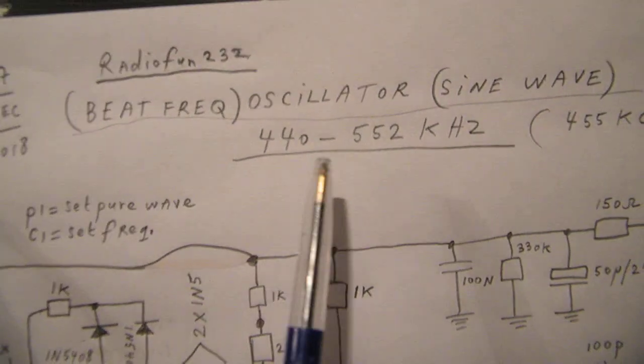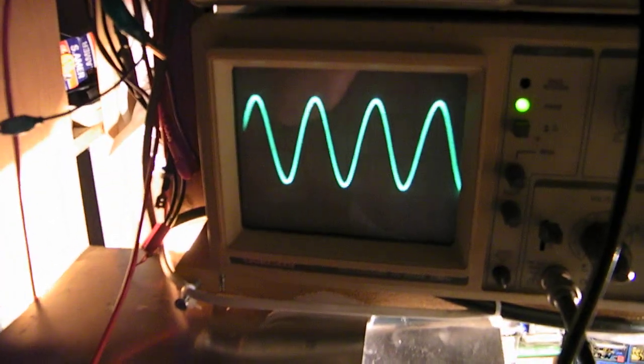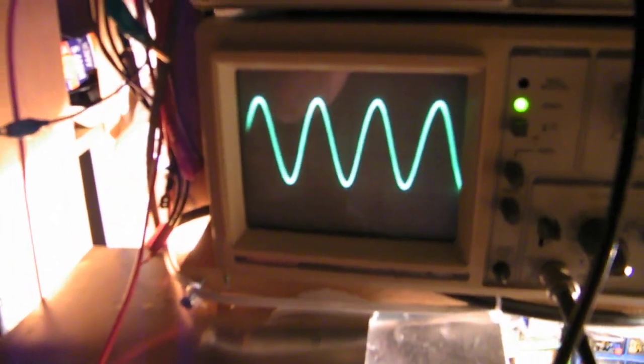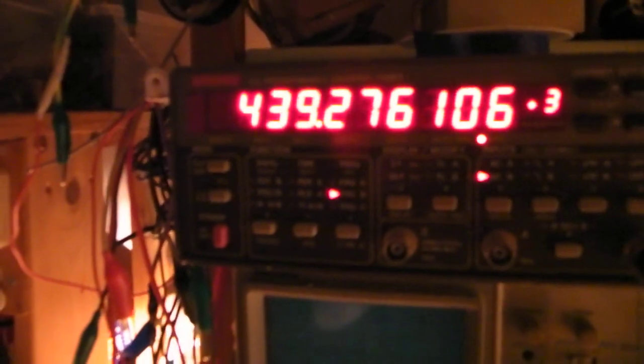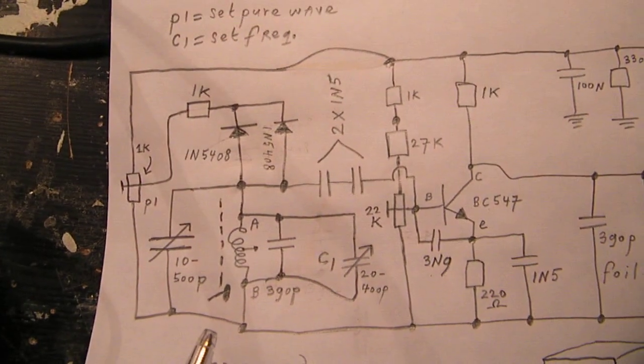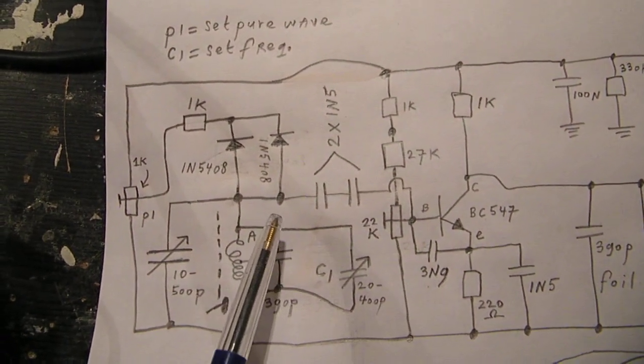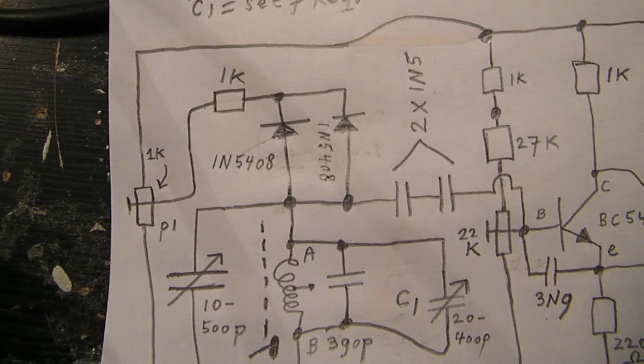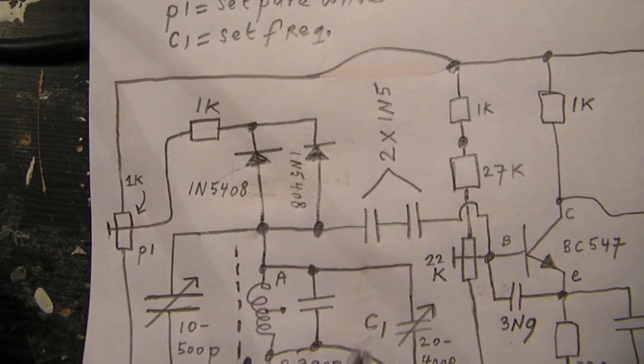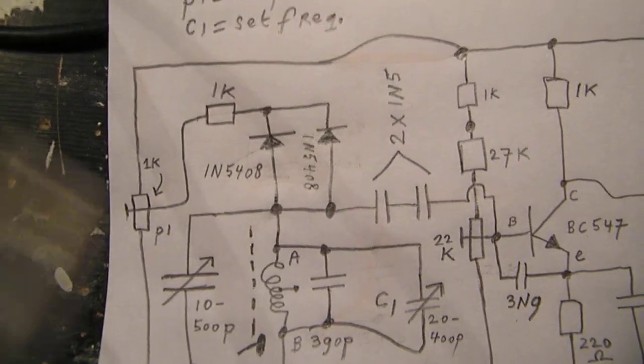That is of course here 440 up to 552 kilohertz. You see the sine wave, at the moment it's oscillating on 439 kilohertz. In the previous circuit I used a potentiometer and a few silicon diodes, big silicon diodes the 1N5408. They can act as a kind of variable capacitor, varicap or varactor.